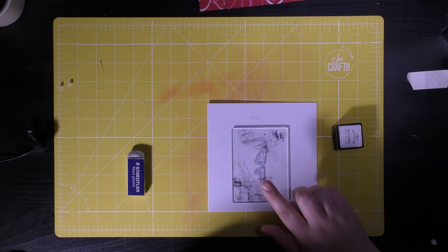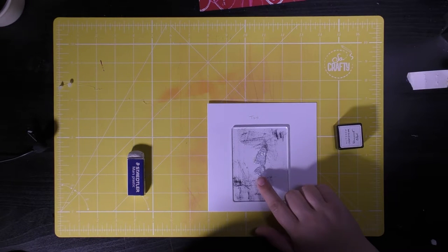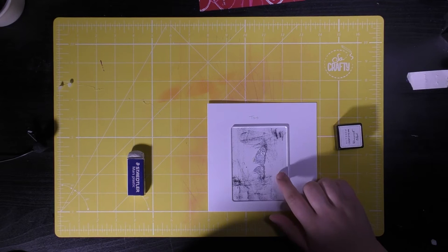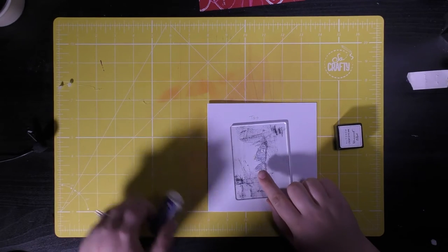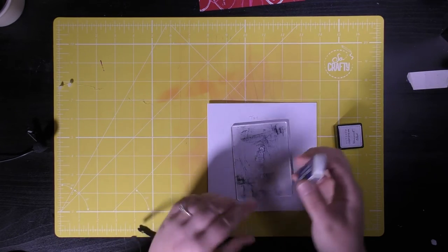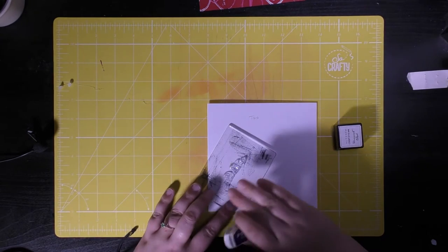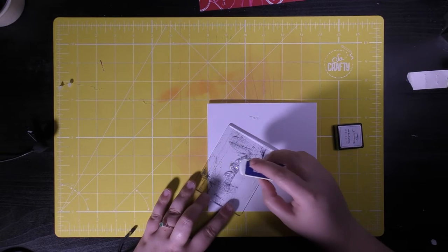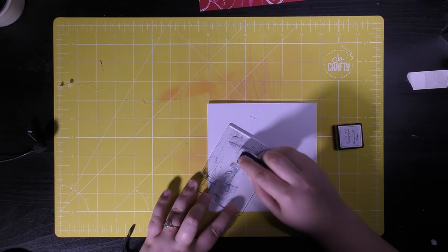We're going to prepare our card base. I've got a sentiment stamp that says with love and a little black ink pad. I haven't used this stamp before so I've got an eraser here and I'm just going to rub the eraser over the surface of my stamp because when they're produced, sometimes there's some residue left behind.